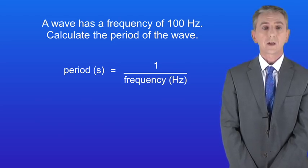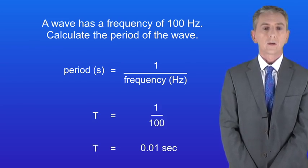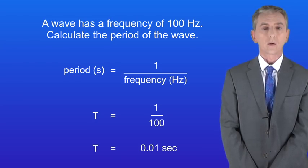Okay so the period is one divided by the frequency. The frequency is 100 Hertz. Dividing one by 100 gives us a period of 0.01 seconds.